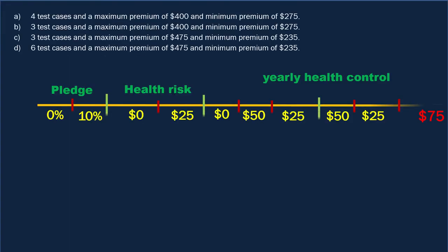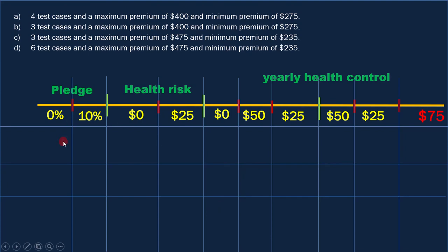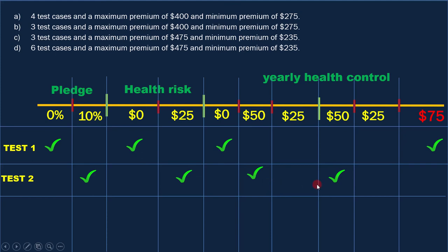Now let's see how many test cases are required to test this effectively. The first test case is for smokers who are not part of the pledge, didn't fill the health risk form, and since they didn't participate in any of it, they have to pay additional $75. The next test case is for smokers who participate in the pledge, filled the health risk form, and joined the non-smoking class — then they will get $50 off. Now only the $25 column is left, so we just need one more test case to cover it. That means with 3 test cases we can cover all the conditions.